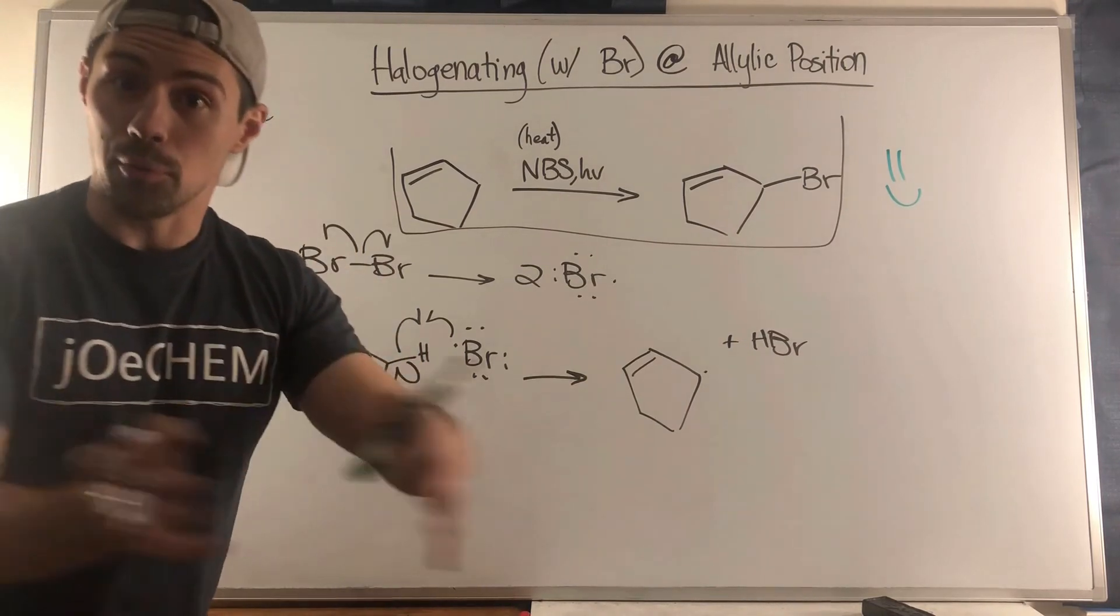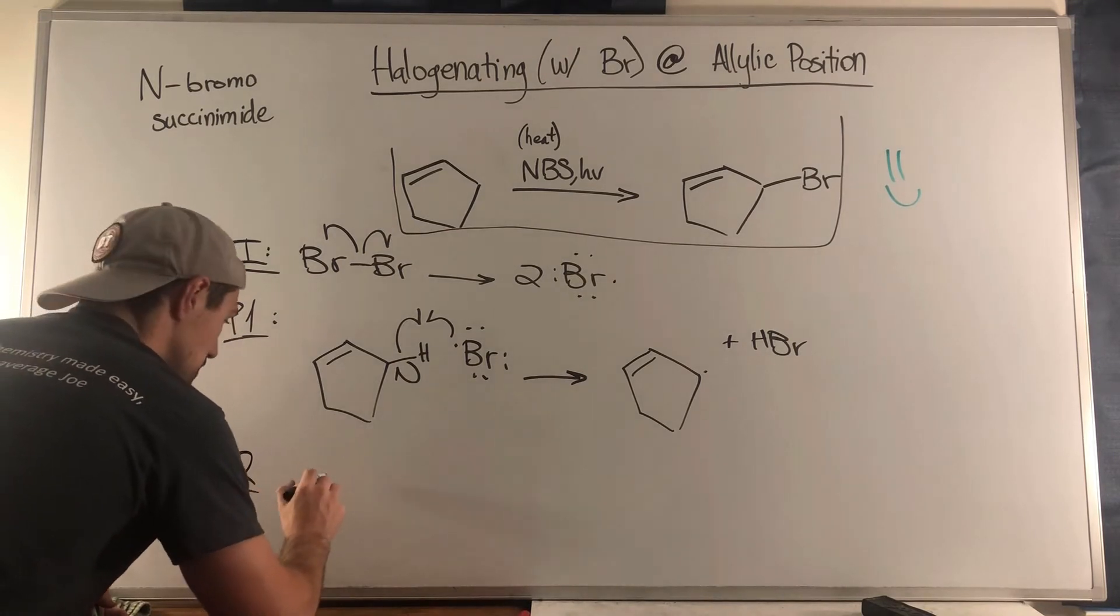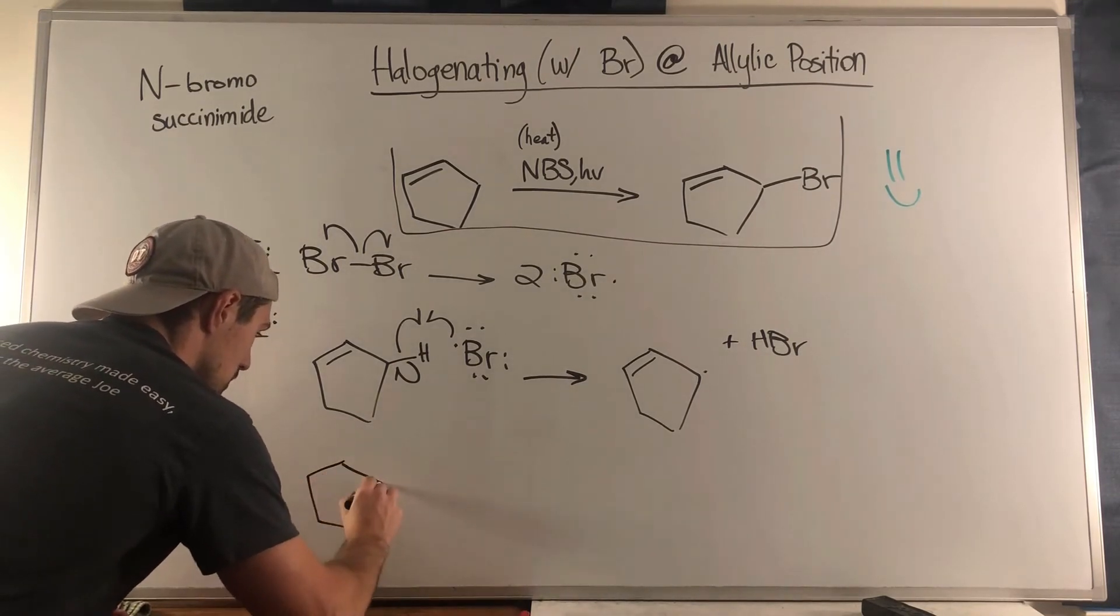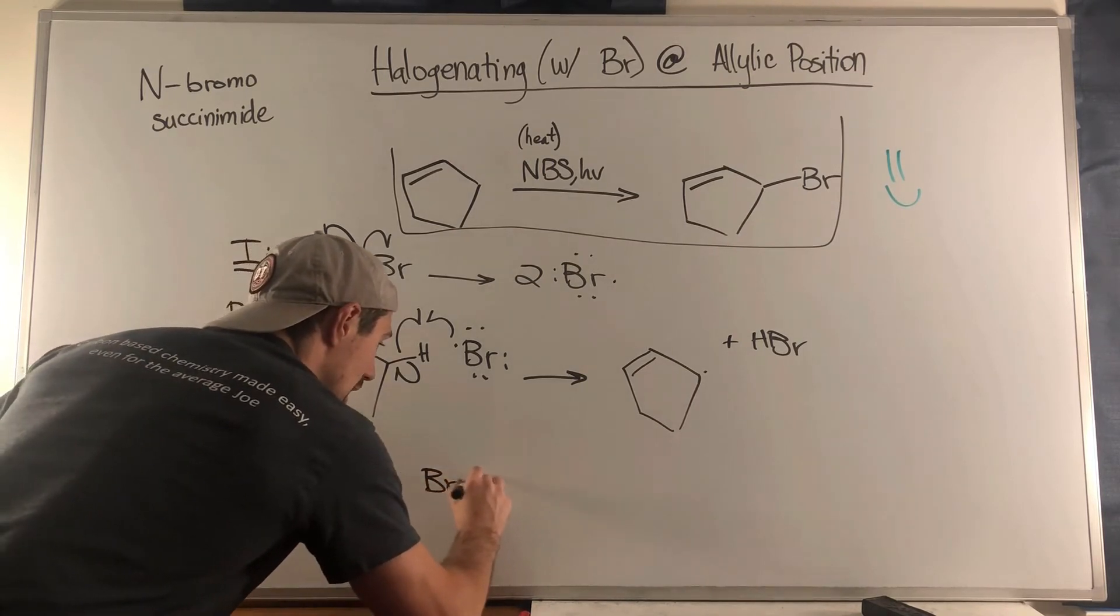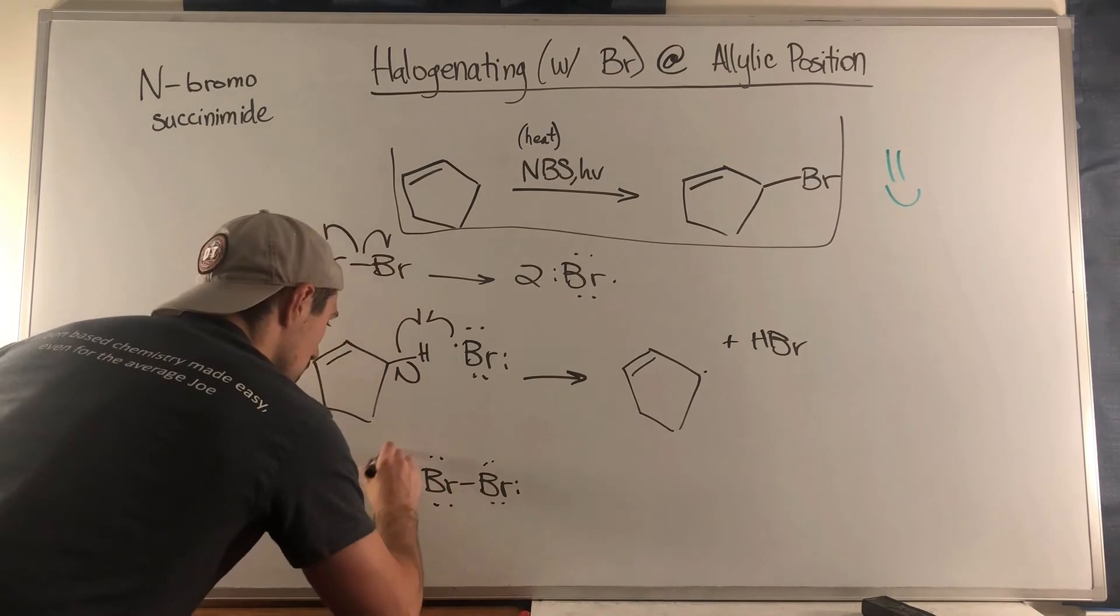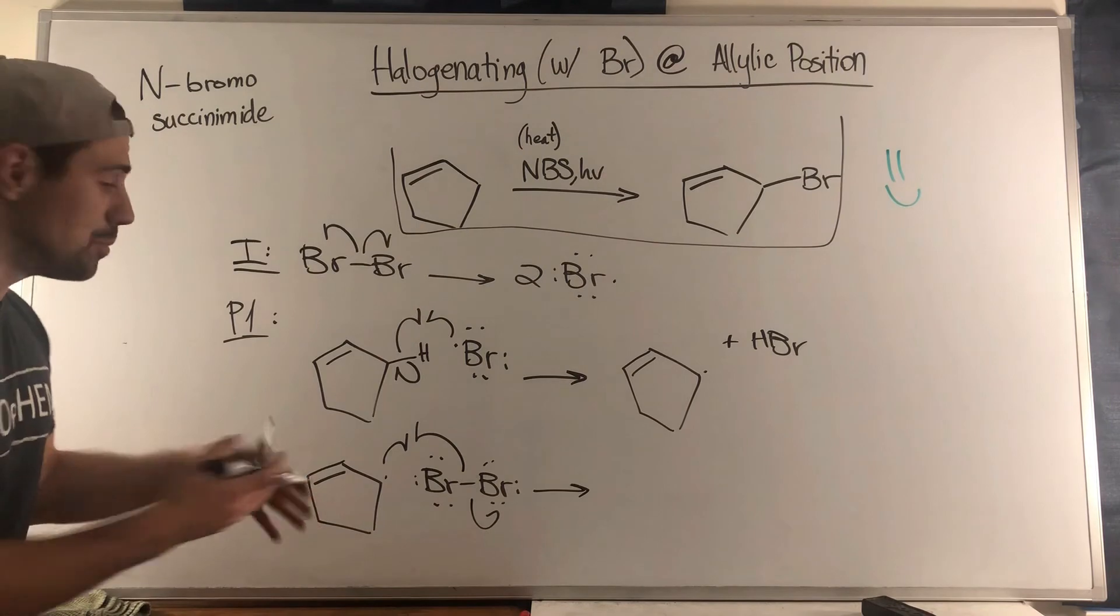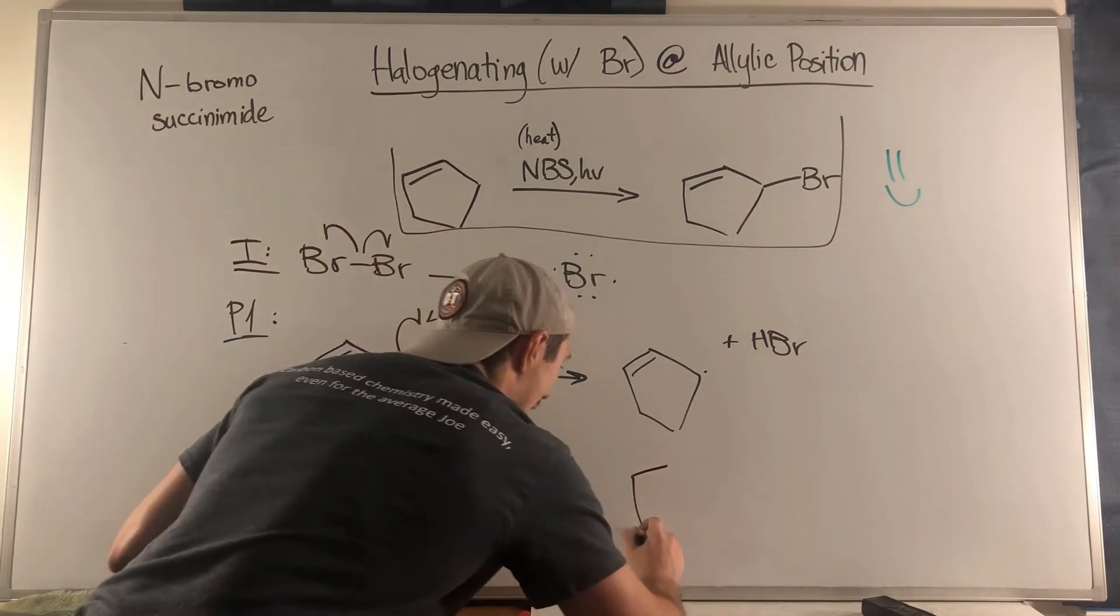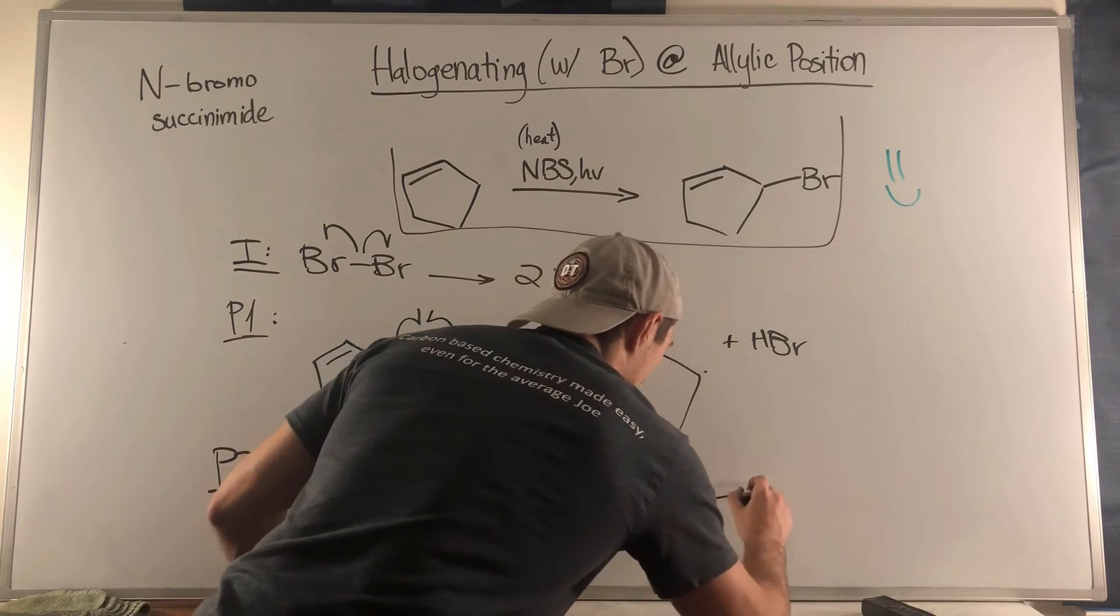Then P2, you can run into another Br2 - again in low concentration but still being produced. But you also have more bromine radical being created just by actually doing the reaction.